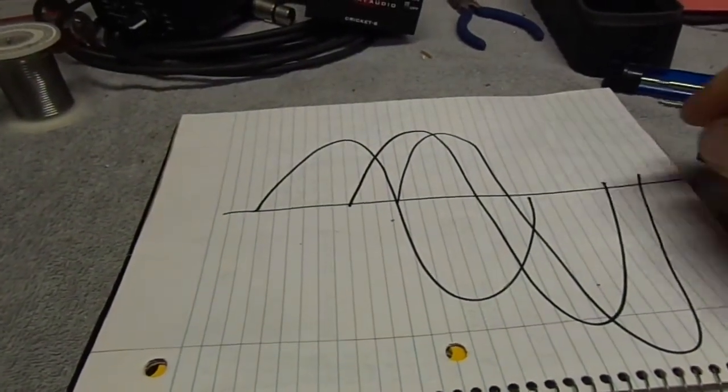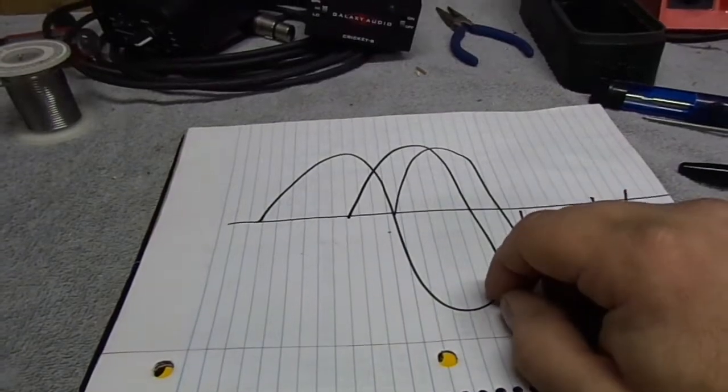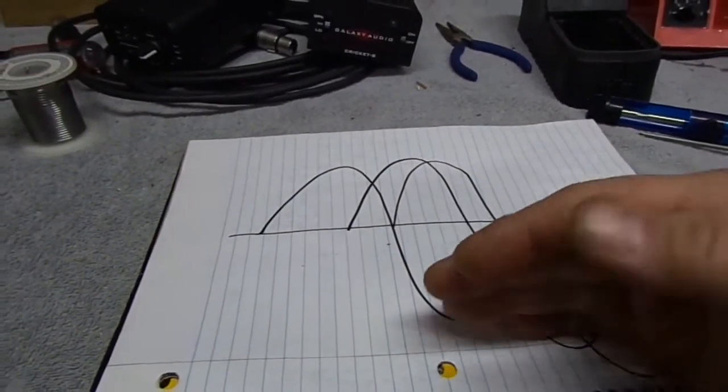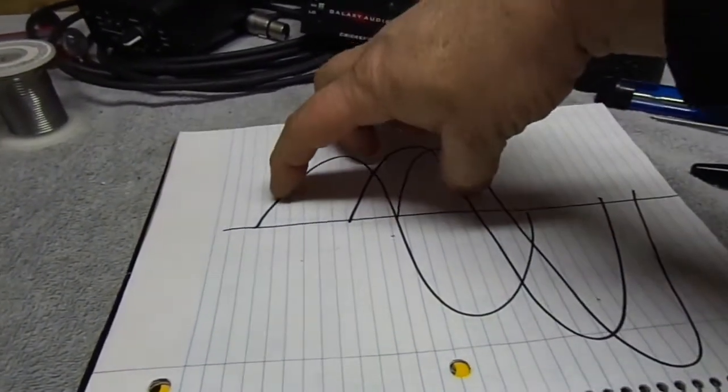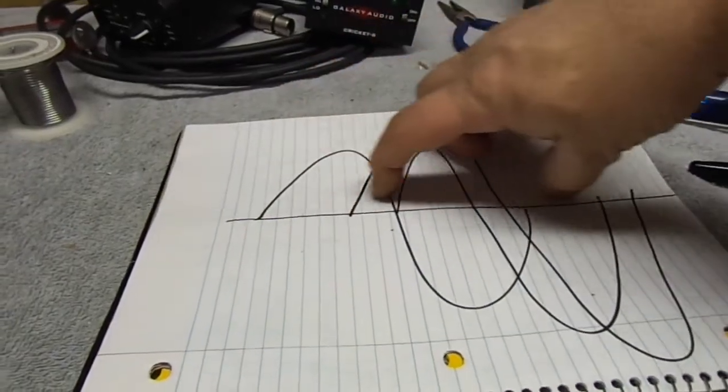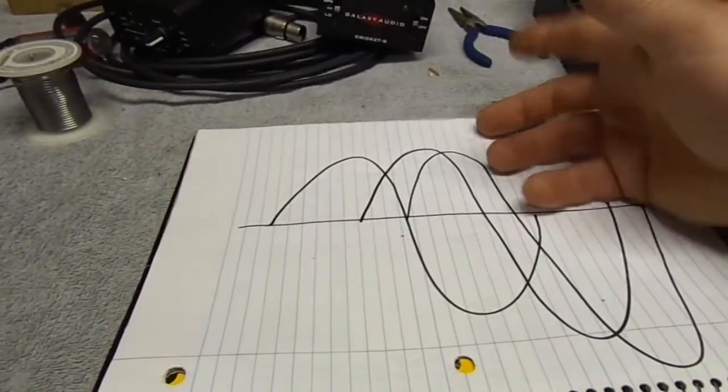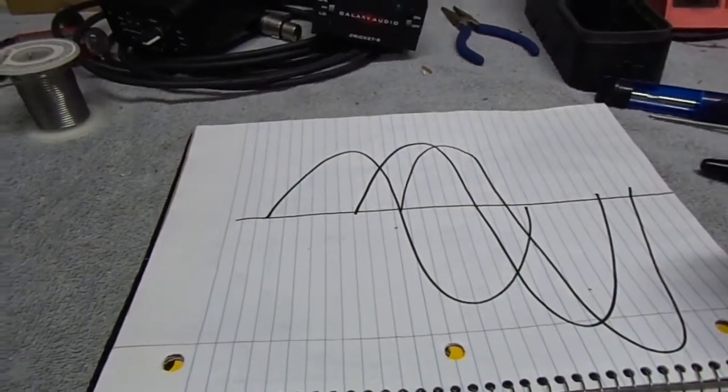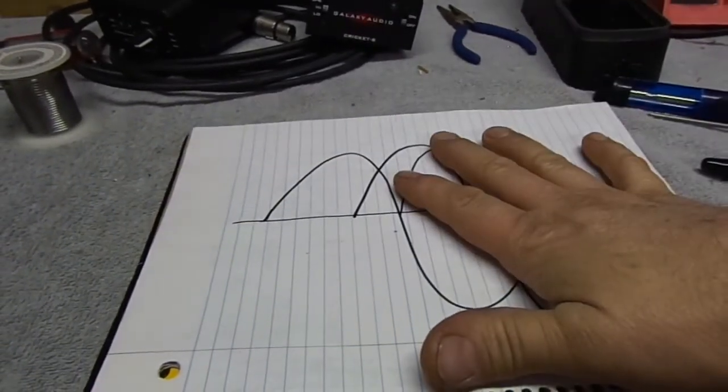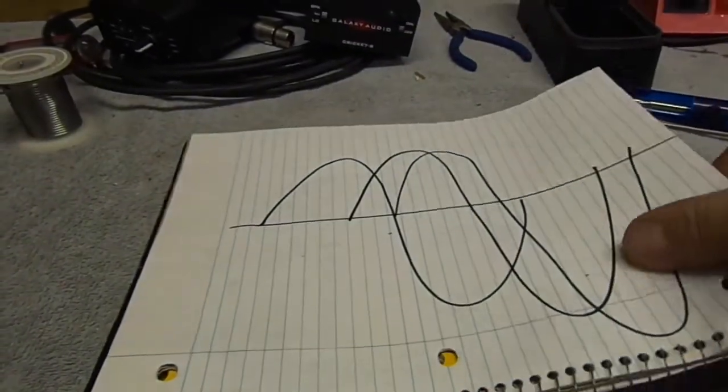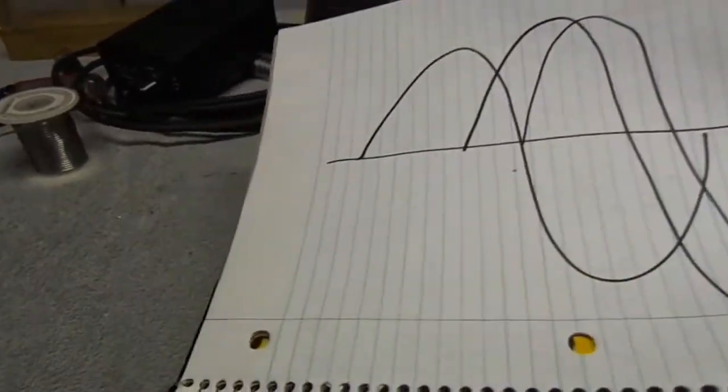So, what that means is, if you hit the phase invert button on the vocal microphone, and the singer's far enough away, the farther he is from the source, the more this line shifts, and that's phase angle or delay. Same way when you're aligning subwoofers. So, just keep that in mind. Try it sometimes. Most of the time, it won't work. Sometimes it does.